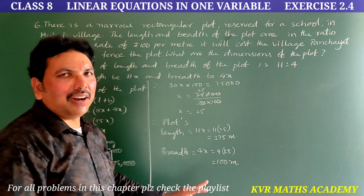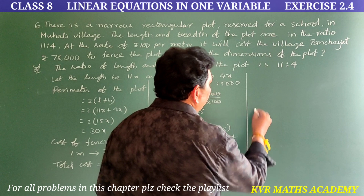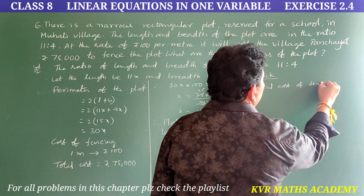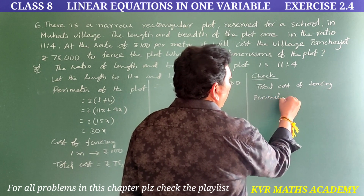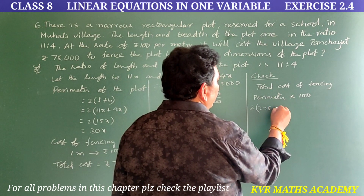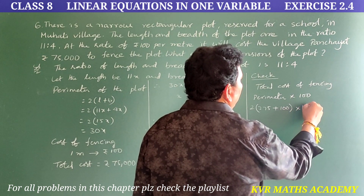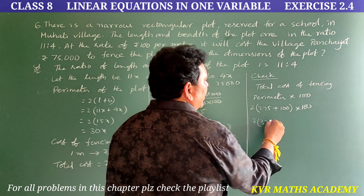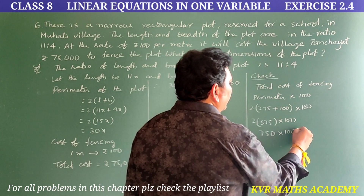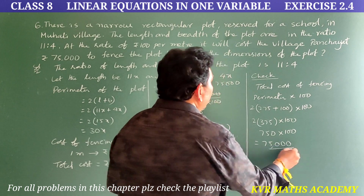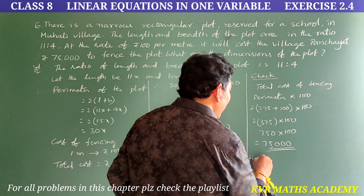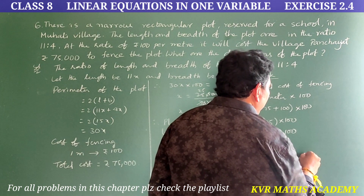Let us check whether it is correct. Total cost of fencing equals perimeter into rupees 100. Perimeter is 2 into l plus b, which is 2 into 275 plus 100, equals 2 into 375, which is 750. Then 750 into 100 equals 75,000. We have got rupees 75,000, so hence the result is true.